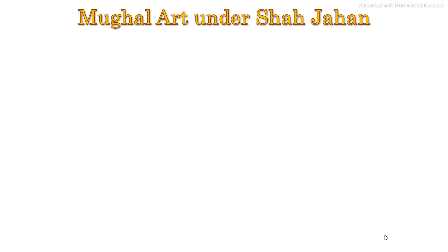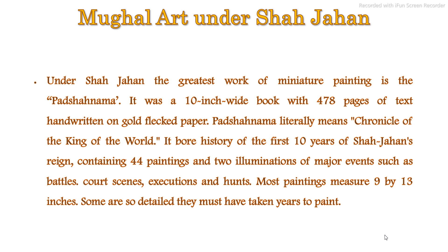Let's look at the Mughal art under Shah Jahan. Under Shah Jahan, the greatest work of miniature painting is the Padshahnama. It was a 10-inch wide book with 478 pages of text handwritten on golden-flecked paper. Padshahnama literally means 'chronicle of the king of the world.' It bore the history of the first 10 years of Shah Jahan's reign. It contained 44 paintings and two illuminations of major events such as battles, court scenes, executions, and hunts. Most paintings measure 9 by 13 inches, and some are so detailed they must have taken years to paint.